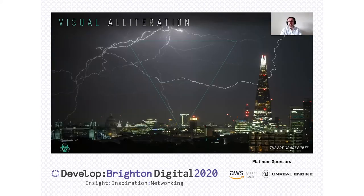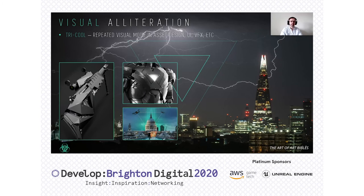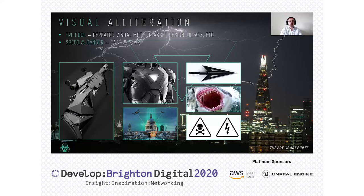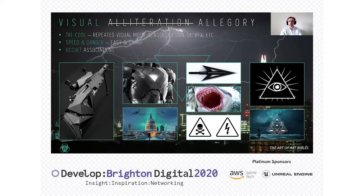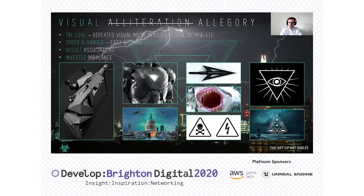The visual alliteration for Project Alt — I chose the triangle as the repeated motif that would turn up in asset designs, UI, VFX, and the like. I did this because it's fast and sharp, there are associations already there — it already has meaning. Beyond that, I wanted to tie into the occult associations. Because that starts taking it into a deeper meaning rather than just the shallow fast-and-sharp side of things, that makes it a visual allegory. I also inverted the triangle for imbalance — an arrow pointing downwards, which can also infer certain meanings.